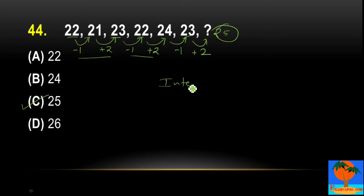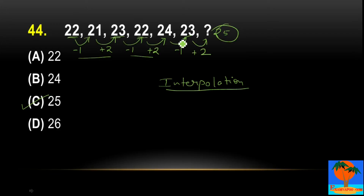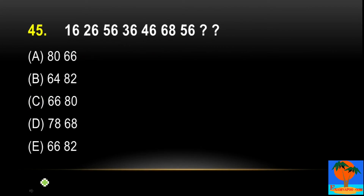I have not thought of interpolation here — that 22 repeats and 23 appears twice as interpolation. Two-times interpolation generally does not happen in exams. So we have to think of another logic. Next question: 16, 26, 56, 36, 46, 68, and then 56. We have to find the next terms. Maybe interpolation is possible. How is 56 here and here 56? But there are 2 terms, then 56, then 3 terms, then 56.